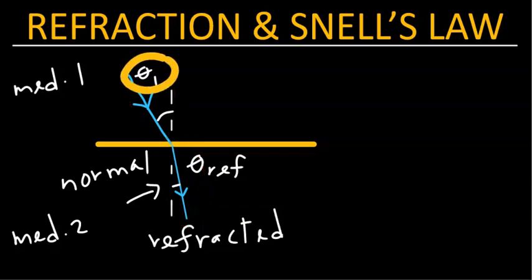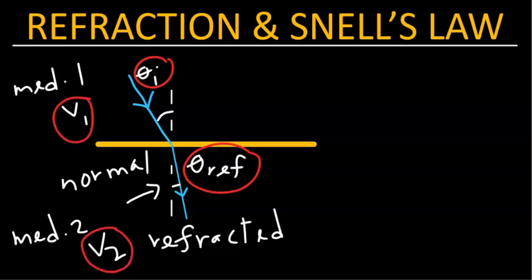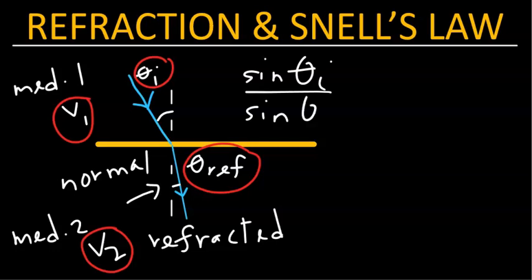That's why these two angles are different. What causes the light to bend is the different speed of light in the two different mediums. So in medium 1 the speed of light is v1, and in medium 2 the speed is v2. These four quantities — the two thetas and the two speeds — are related as follows: sine of the incident angle over the sine of the angle of refraction equals v1 over v2.